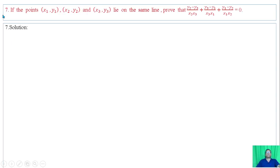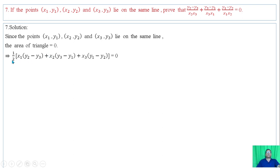Question 7: If the given points lie on the same line, prove that this expression equals zero. Since the points lie on the same line, the area of the triangle is zero. Using this formula, we have the result. Then dividing both sides, or dividing both sides by the product of x1, x2, x3, we have the result. Hence proved.